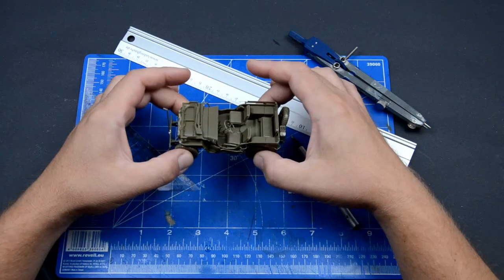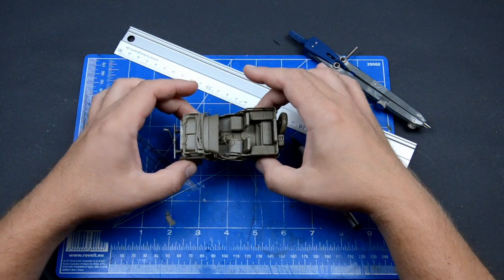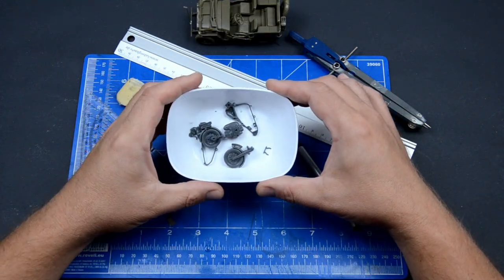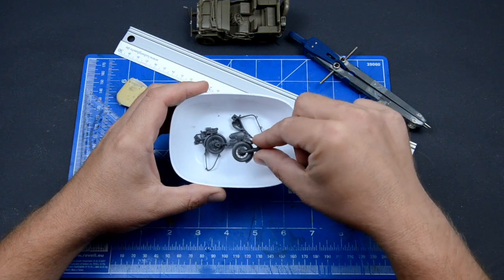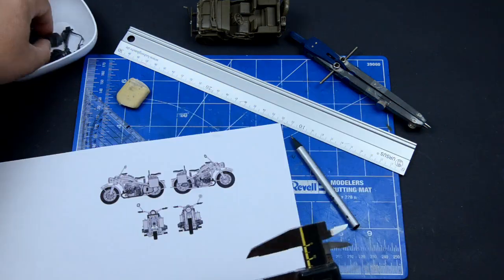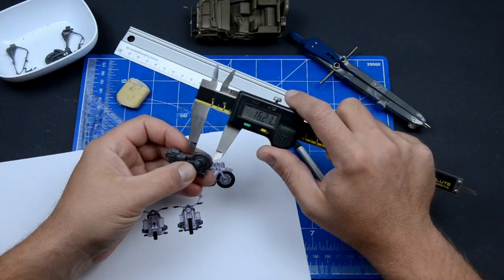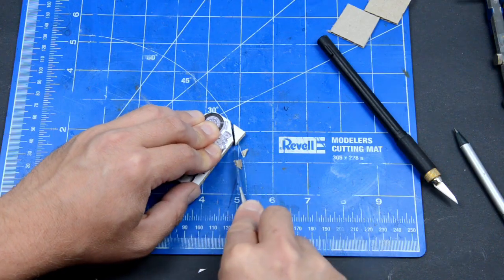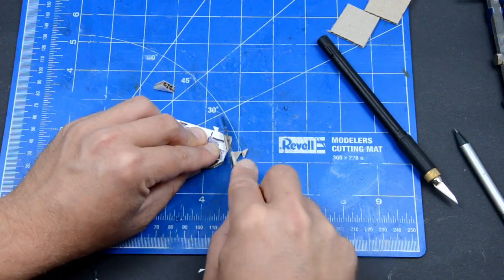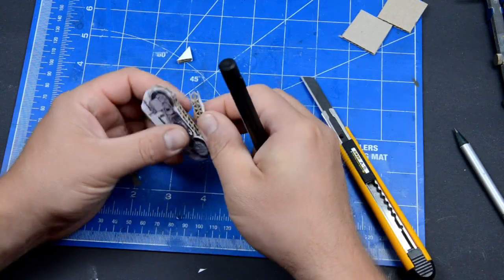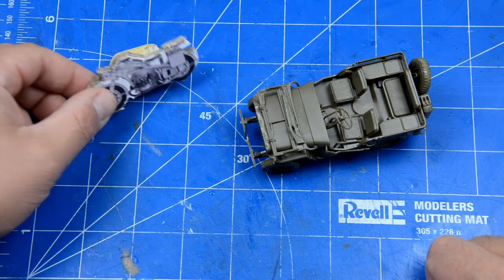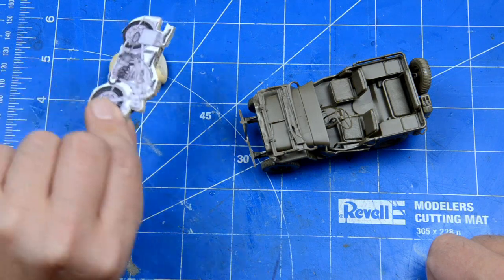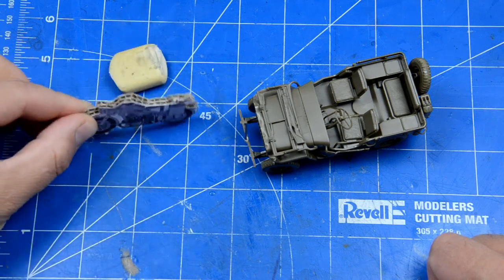Our jeep is ready and we can use it for the mockup. The second vehicle will be a German Zundapp motorcycle, but unfortunately it's still in pieces. I downloaded some photos and resized them to 1:35 scale. We glue them on thick cardboard and cut the basic shape out. Now we have a dummy motorcycle that will be perfect for the mockup process.